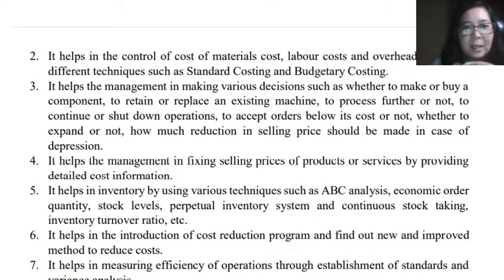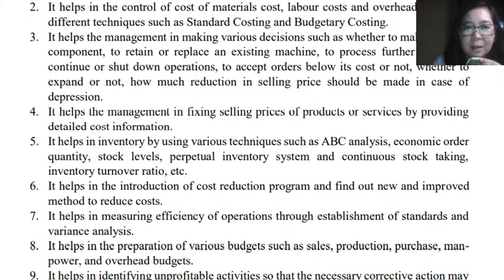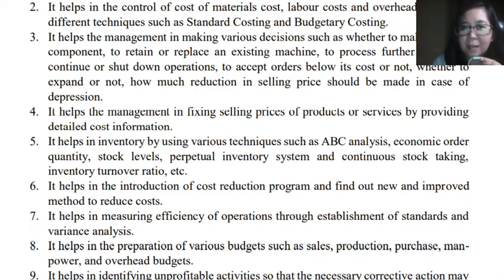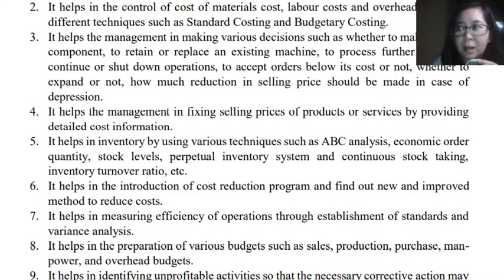Number six, cost data can also help in the introduction of a cost reduction program — this is how the entity or management controls their costs and finds new and improved methods for reducing costs further. Number seven, cost data will also help in measuring the efficiency of operations through the establishment of standards and variance analysis. Standard costs are predetermined or budgeted costs expected by management, and when actual costs differ from standard, the difference is called a variance — meaning either overage or shortage.